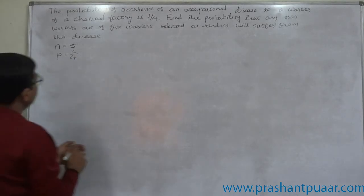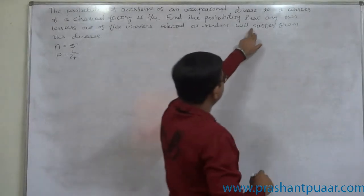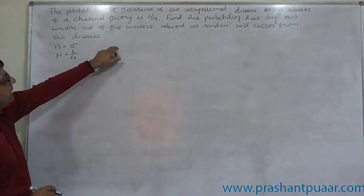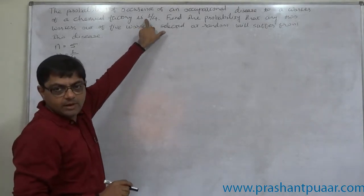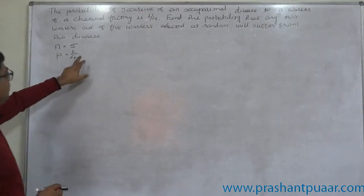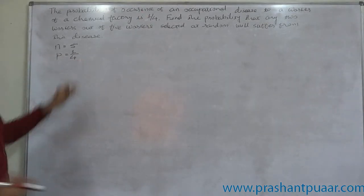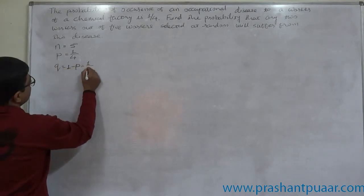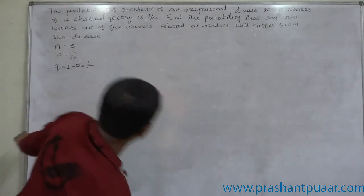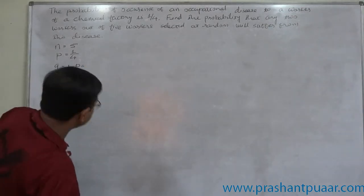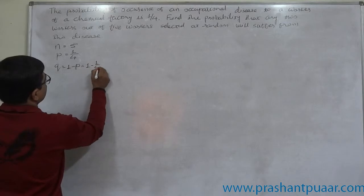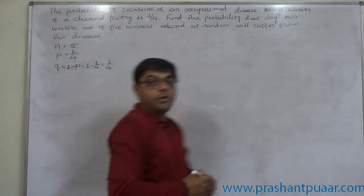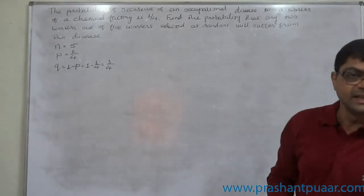Why can it be treated as P? Ultimately, we want to find the probability of suffering from disease, and general probability of suffering from disease is 1 by 4. So it should be treated as P but not Q. Q is nothing but 1 minus P, that means 1 minus 1 by 4, or it is 3 by 4. That means probability of any randomly selected worker not suffering from this disease is 3 by 4.